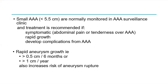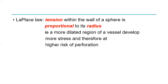Most small abdominal aortic aneurysms — by definition less than 5.5 cm — are monitored in an aneurysm surveillance clinic. Treatment is recommended if they become symptomatic with abdominal pain or tenderness overlying the aneurysm, or if there is rapid growth. Rapid growth is defined as more than 0.5 cm over six months, or more than 1 cm over a year. Rapid growth increases the risk of rupture, based on Laplace's law, where tension within the wall is proportional to its radius.